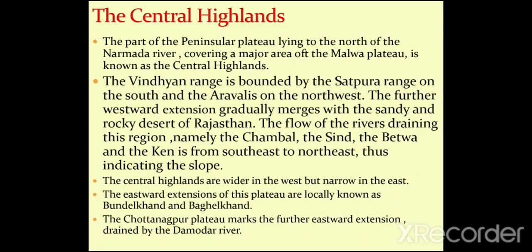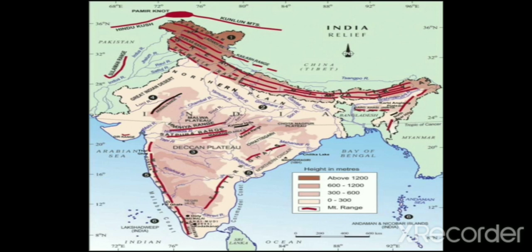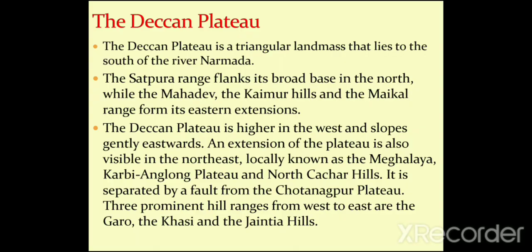Here on the map we can see the Damodar river, the Satpura range, the Vindhya range, the Malwa Plateau, and the rivers Chambal, Sindh, Ken, and Betwa. We will now look at the Deccan Plateau.